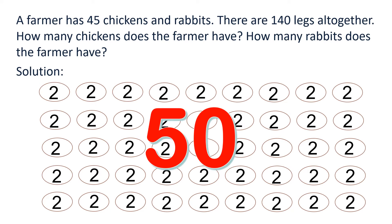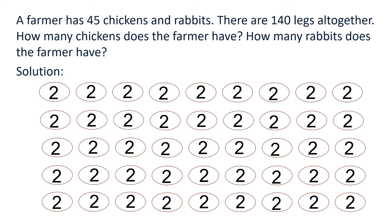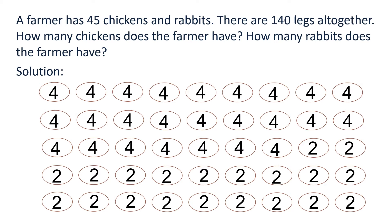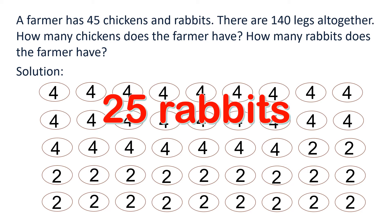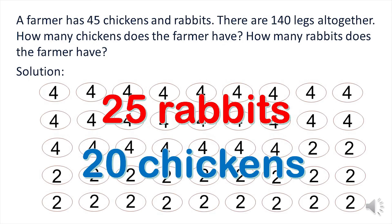We need to add two legs to each of the animals. Then 50 divided by 2: 25 animals will receive two additional legs. That means we have 25 animals that have four legs, and the remaining 20 animals that have two legs. Hence, there are 25 rabbits and 20 chickens in all.